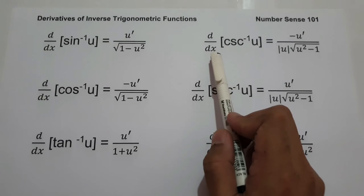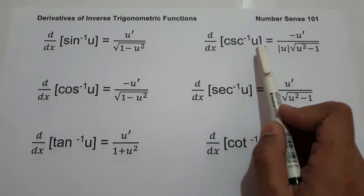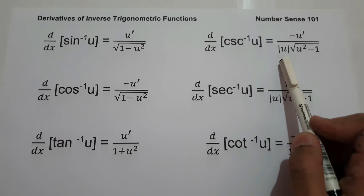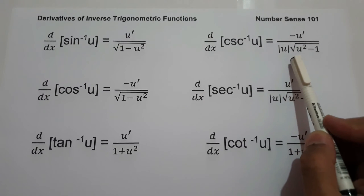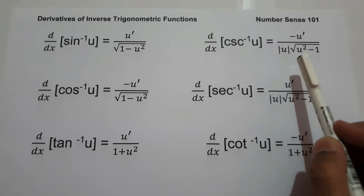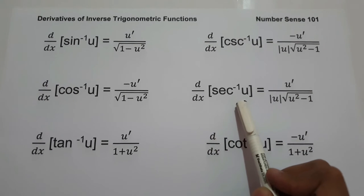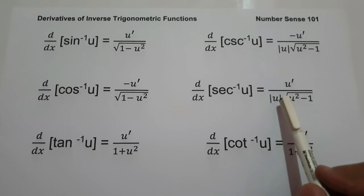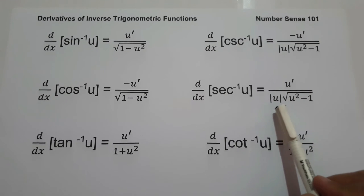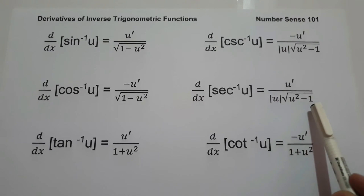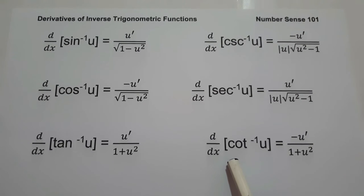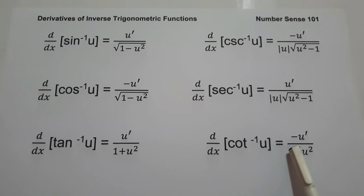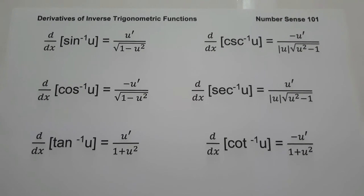And then we have the derivative of arcsec u is equal to negative u prime over the absolute value of u multiplied by the square root of u squared minus 1. And then we have the derivative of arcsec u is equal to u prime over the absolute value of u multiplied by the square root of u squared minus 1. And lastly, we have the derivative of arccot u is equal to negative u prime over 1 plus u squared. So these are the formulas that you need to remember in order to find the derivatives of inverse trigonometric functions.